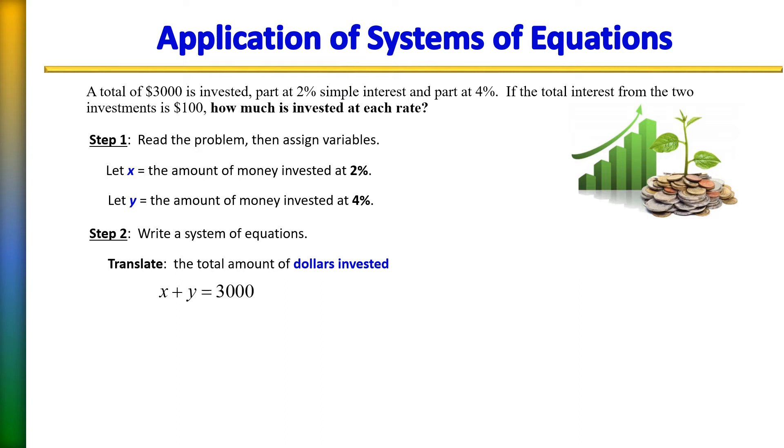Our second equation deals with the interest. So we know that with the first account, it was invested at a 2% interest. The second account was invested at 4% interest. And we know that between the two of them, it yielded $100. So that's our second equation. We're going to go ahead, instead of writing it as a percent, we're going to write it as a decimal. So there's our second equation.